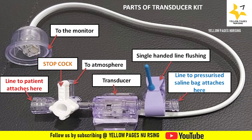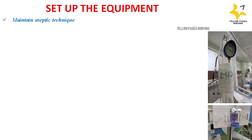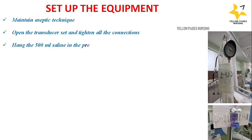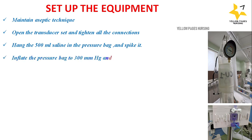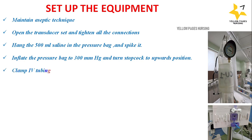Before insertion of an arterial line, the transducer setup should be done. Perform hand hygiene and maintain aseptic technique. Open the transducer set and tighten all connections. Hang the 500 ml saline in the pressure bag and spike it; add heparin according to hospital policies to keep the line free from clots. Inflate the pressure bag to 300 mmHg and turn the stopcock to the upward position to prevent backflow from the cannula.